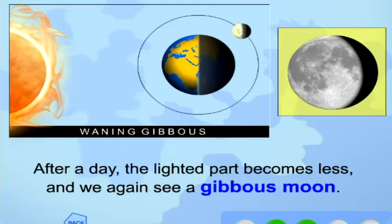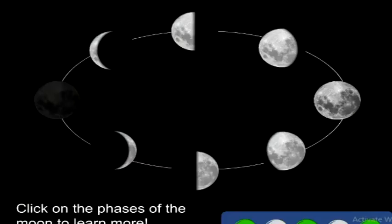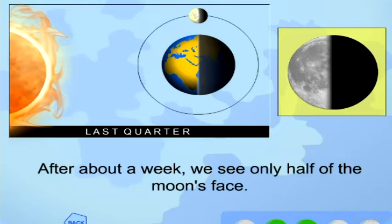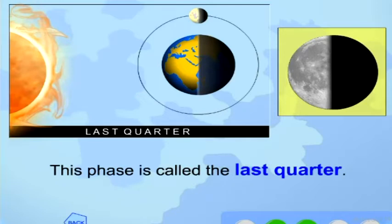After a day, the lighted part becomes less, and we again see a gibbous moon. After about a week, we see only half of the moon's face. This phase is called the last quarter.